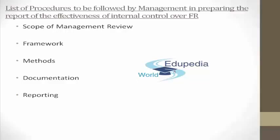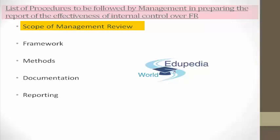Now, what are the list of procedures required to be followed by management in preparing the report on the effectiveness of internal control over financial reporting? Number one: scope of management review. Management should review the company's controls relating to: what happens when the financial reporting process begins — initiating, reporting, processing, and then reconciling all the balances, classes of transactions, disclosures, and related assertions included in the financial statements.